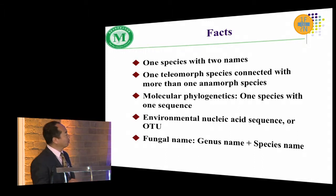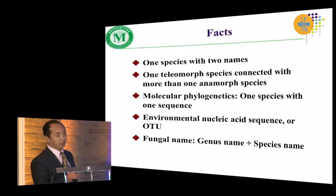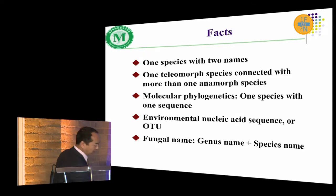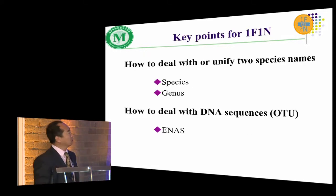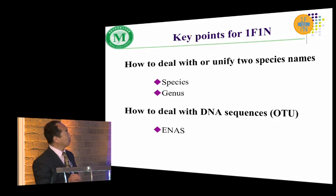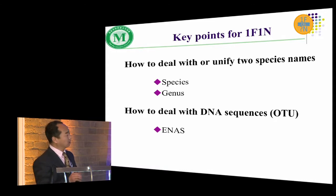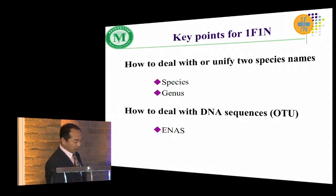For the name of a fungus, it includes a genus name and also a species name. So what we should focus on is how to unify the two names and also how to deal with the DNA sequence environment.